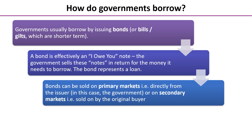Bonds can be sold on primary markets, i.e. directly from the issuer — in this case the government. So if you wanted to buy a government bond, you can buy one on a primary market, say for example with a 10-year maturity date. But if after two or three years you find you need the cash, you can then sell that bond on a secondary market, sold on by you or the original buyer onto other buyers.